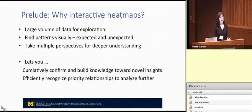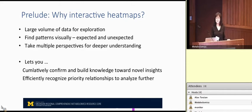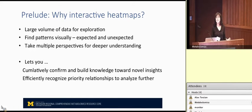So why is it important to have interactive heat maps? What they allow you to do is to look at large volumes of data and to find patterns visually in those data. We exploit our visual system for being able to recognize patterns — both what we expect to see and things that we don't expect to see. These processes let you get to know your data progressively better.